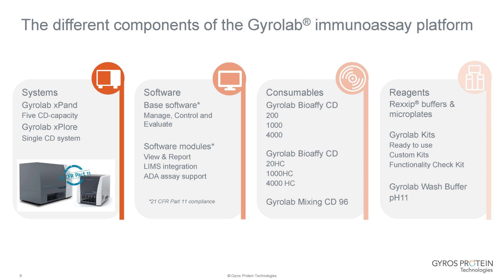We have a range of different consumables, including different compact discs. The number in the name relates to the volume: a 200 is a 200 nanolitre CD, a 1000 is a 1000 nanolitre CD, and a 4000 is a 4000 nanolitre CD. We also have high-capacity CDs with different high-capacity columns, which can be very useful for different assays, particularly when using polyclonal antibodies as capture.